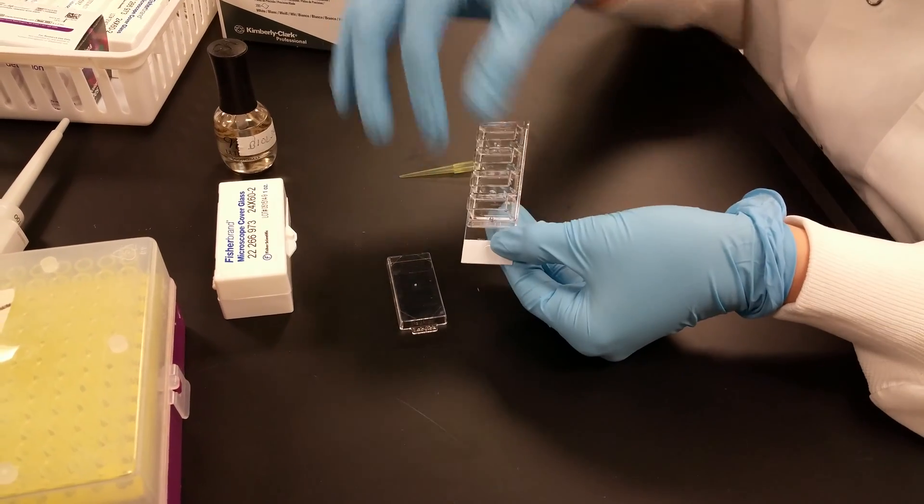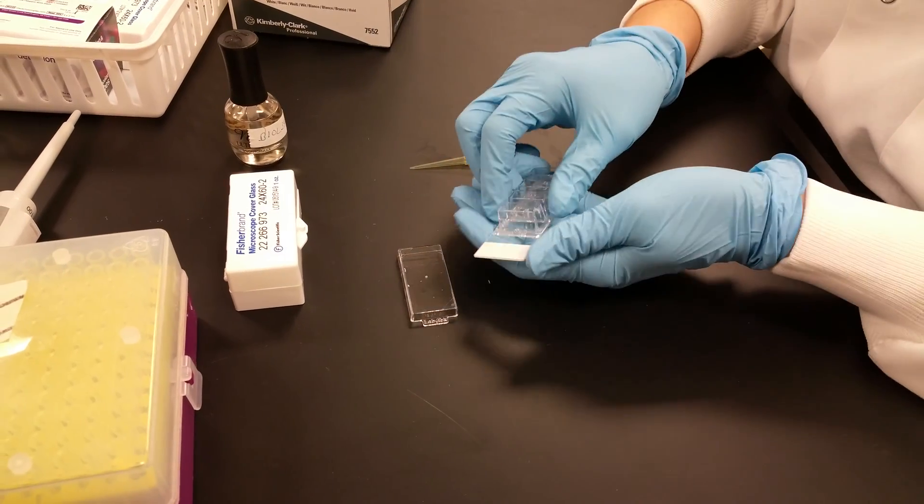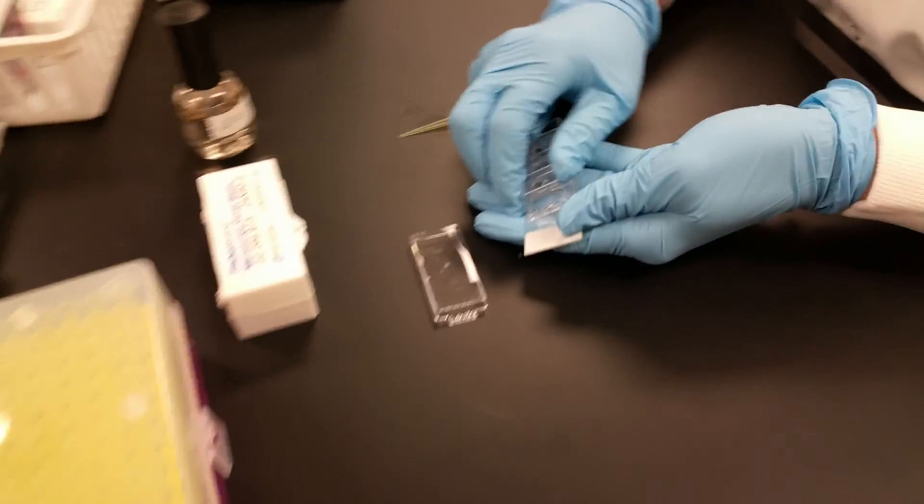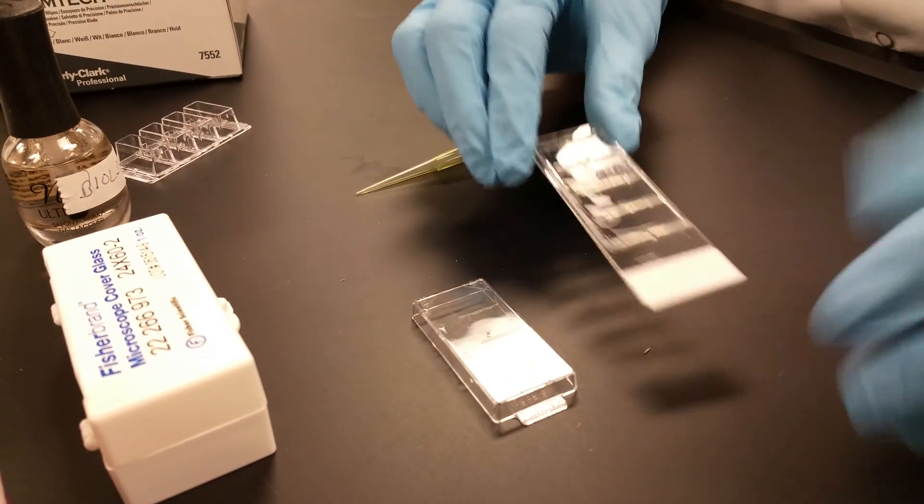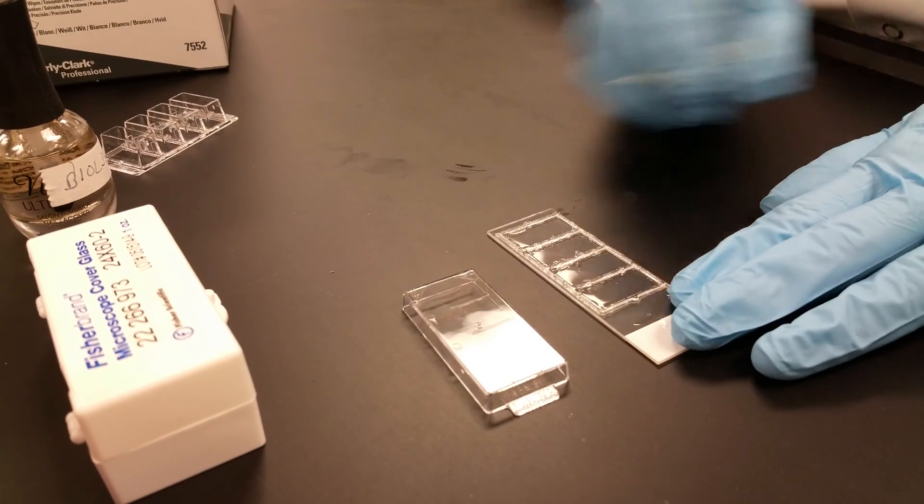Our first step is removing this plastic gasket. To do that, you just hold onto the slide and gently peel that off. You don't need this part anymore, so that goes away.